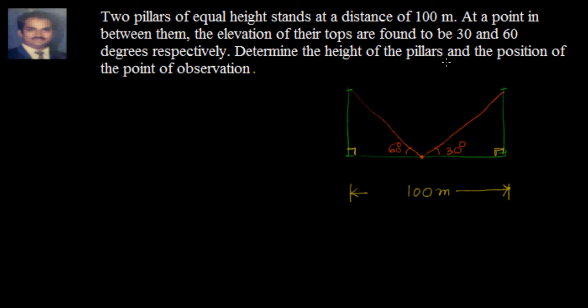Determine the height of the pillars and the position of the point of observation. That means he is asking us to find out this distance. If this becomes x, we know very clearly that this is equal to 100 minus x. What else we have been told? We have been told that this is equal to this. So try to understand the problem and we have tried to depict it in pictorial format.